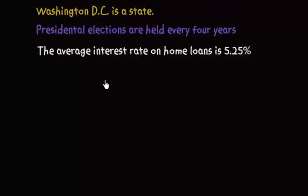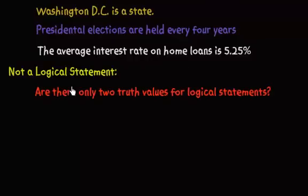So let's take a look at some sentences that are not logical statements. Here's an example: are there only two truth values for logical statements? This is an example of a question. Questions do not carry factual information. The answer to the question probably carries factual information, but the question itself does not.